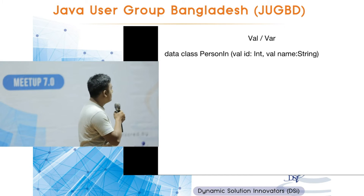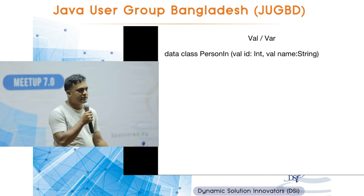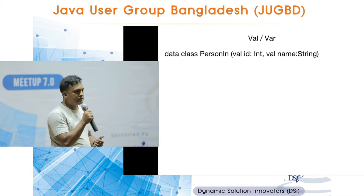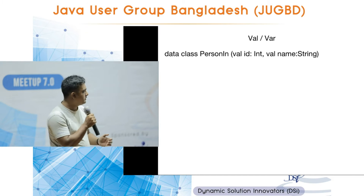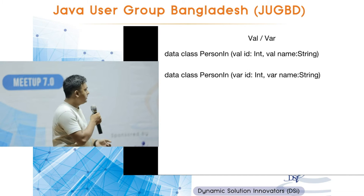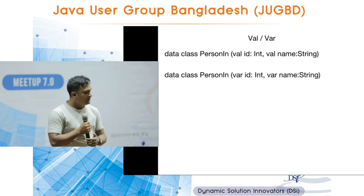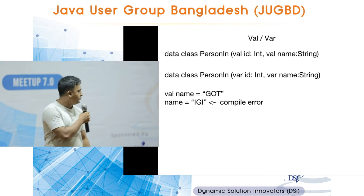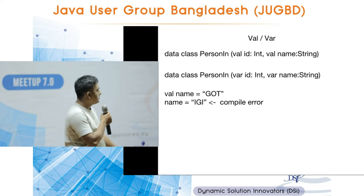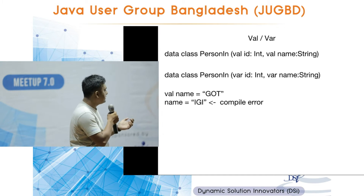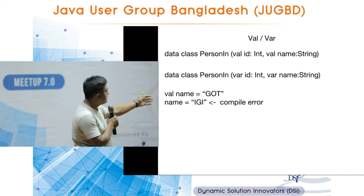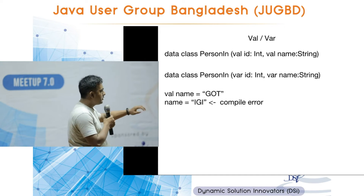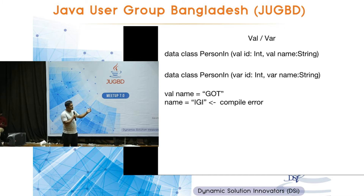There are two types of properties in Kotlin: var and val. Val is immutable — once a value is assigned to a val, you cannot change it. Var is mutable. For example, val name equals 'got' — if you then try to reassign name, you get a compilation error. Notice also that you don't need to declare the type; Kotlin infers from context that it's going to be a String.